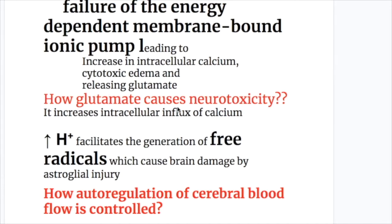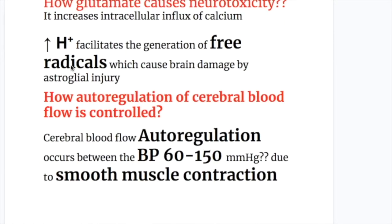How does glutamate cause neurotoxicity? Glutamate increases intracellular influx of calcium. Increased hydrogen ion concentration facilitates the generation of free radicals, which cause brain damage by astroglial injury.